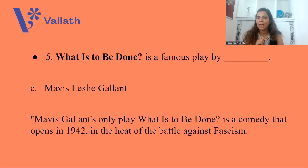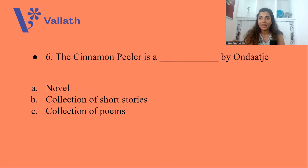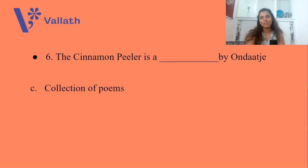Question number six: The Cinnamon Peeler is a work by Michael Ondaatje. Is it A. a Novel, B. a Collection of Short Stories, or C. a Collection of Poems? The Cinnamon Peeler by Michael Ondaatje is option C, a Collection of Poems.